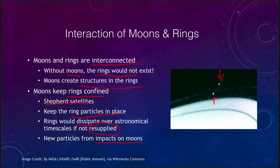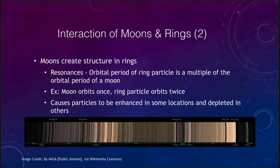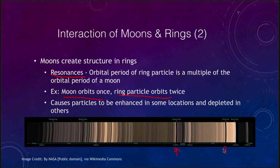Looking closely at one of the rings, we can see all sorts of structures in the rings of Saturn. The moons create those by things like resonances — when the orbital period of a ring particle is a multiple of the orbital period of a moon, the moon orbits once while the ring particle orbits twice, causing particles to be enhanced in some areas and depleted in others. We get distinct gaps from resonances, and narrow rings are well defined because of shepherding satellites.